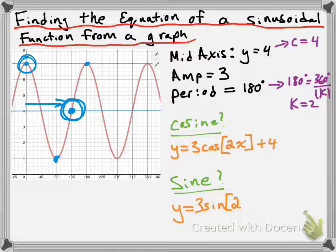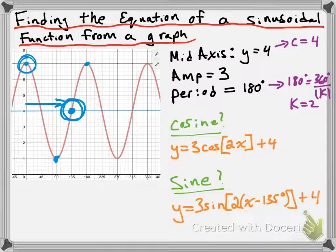So we're going to want to phase shift this 135 degrees to the right. For the phase shift, we're going to have x minus 135 degrees. And since our middle axis is at 4, we're going to have plus 4. So that's another possible equation: y equals 3 times the sine of 2 times (x minus 135 degrees) plus 4.